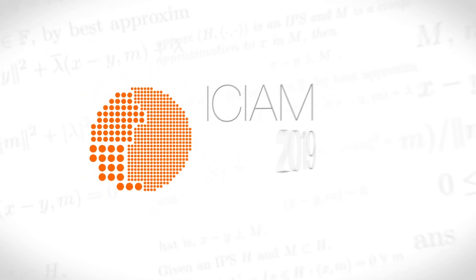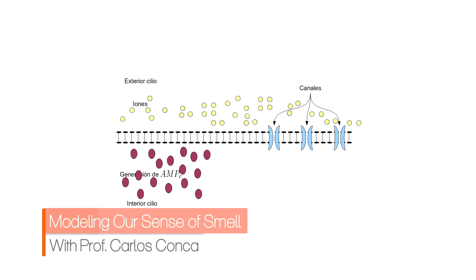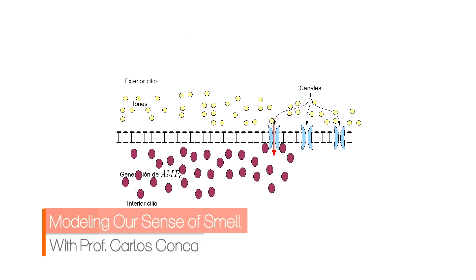We are trying to understand the distribution of the so-called ion channels on the membrane of the cilia. Let's talk now about olfaction, or in layman's terms, our sense of smell. It's an incredibly complex process involving ions and electrical signals, and a mathematician who has been studying this is Professor Carlos Conquer.